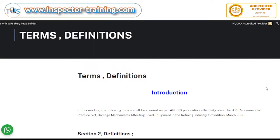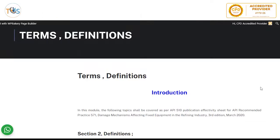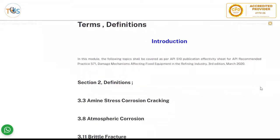API 571 Damage Mechanism and Corrosion Terms and Definitions. In this module, the following topics shall be covered as per API 510 Publication Effectivity Sheet for API Recommended Practice 571 Damage Mechanisms Affecting Fixed Equipment in the Refining Industry, 3rd Edition, March 2022.